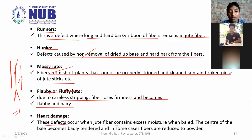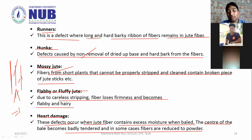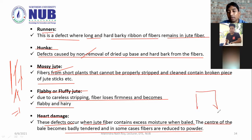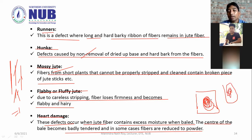Due to careless stripping, the fiber loses firmness. When jute fiber contains excess moisture and the bale center becomes compacted, the fiber will produce powder. The defect manifests in the form of powder within the bale.